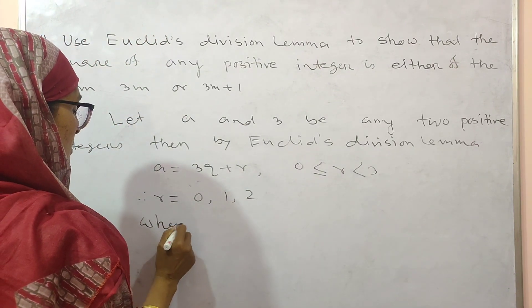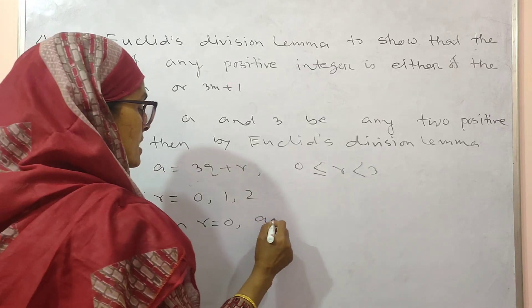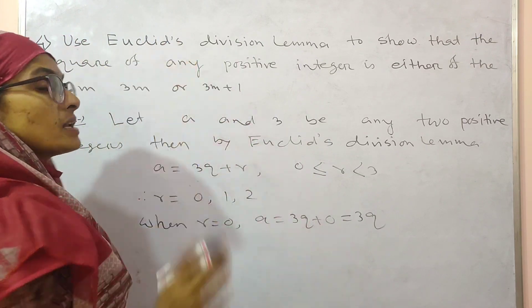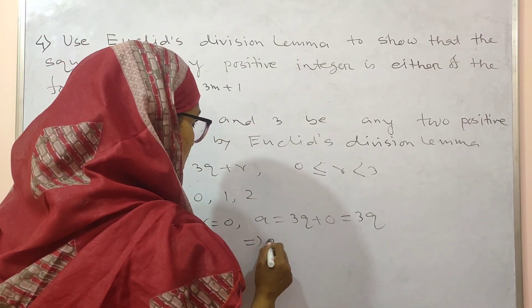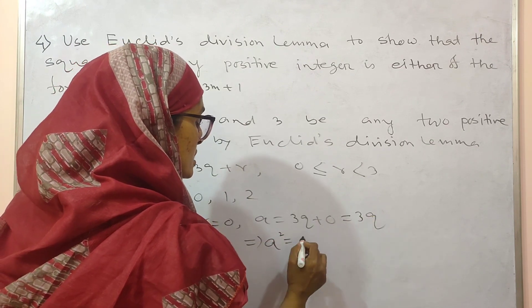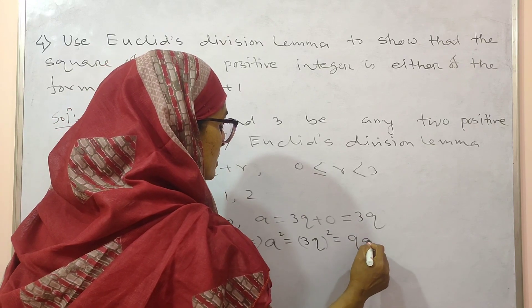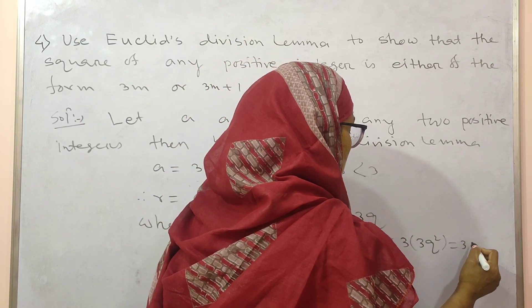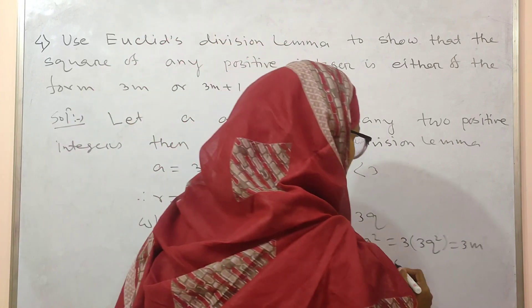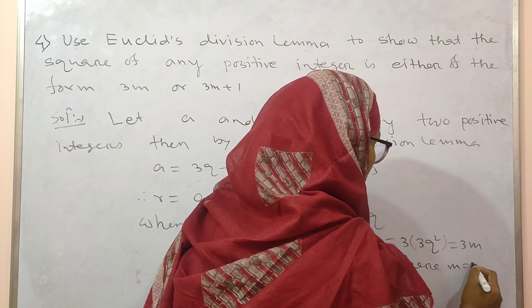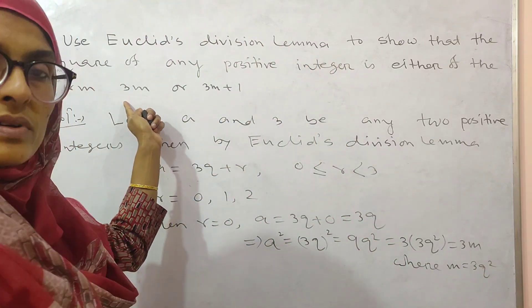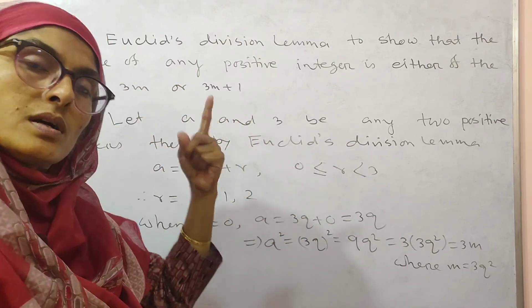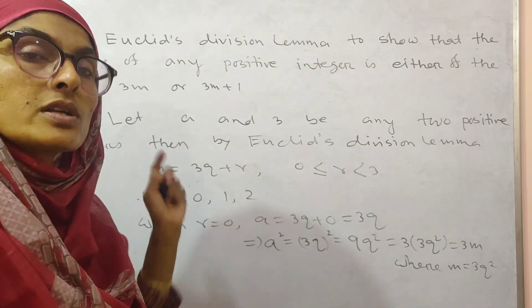When r equal to 0, A equals 3q plus 0, which is simply 3q. But the question asks about the square of any positive integer, so take the square: A squared equals (3q) squared equals 9q squared. You can write this as 3 into 3q squared, or 3M, where M equals 3q squared. Since the question asks for the form 3M or 3M plus 1, if you get 3q write it as 3M. Write your answer according to the question.